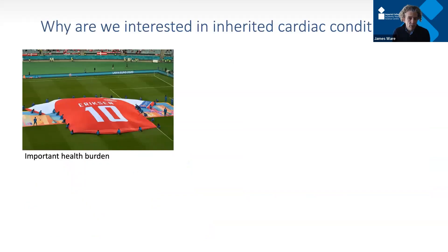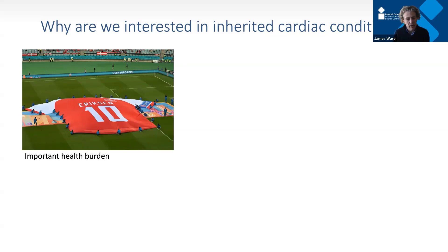These are extremely important health burdens, affecting something like 350,000 people across the UK — individually quite rare, collectively a really big problem. They most commonly come to public awareness when they cause the most feared outcome: sudden cardiac arrest, a collapse due to a heart rhythm problem, which is a leading cause of death in young people. This image reminds us of Christian Eriksson, the Danish footballer who collapsed on the pitch during Euro 2020, and more recently Damar Hamlin, an American footballer who had a cardiac arrest during a game. Crucially, these events can be preventable if we find people in time.